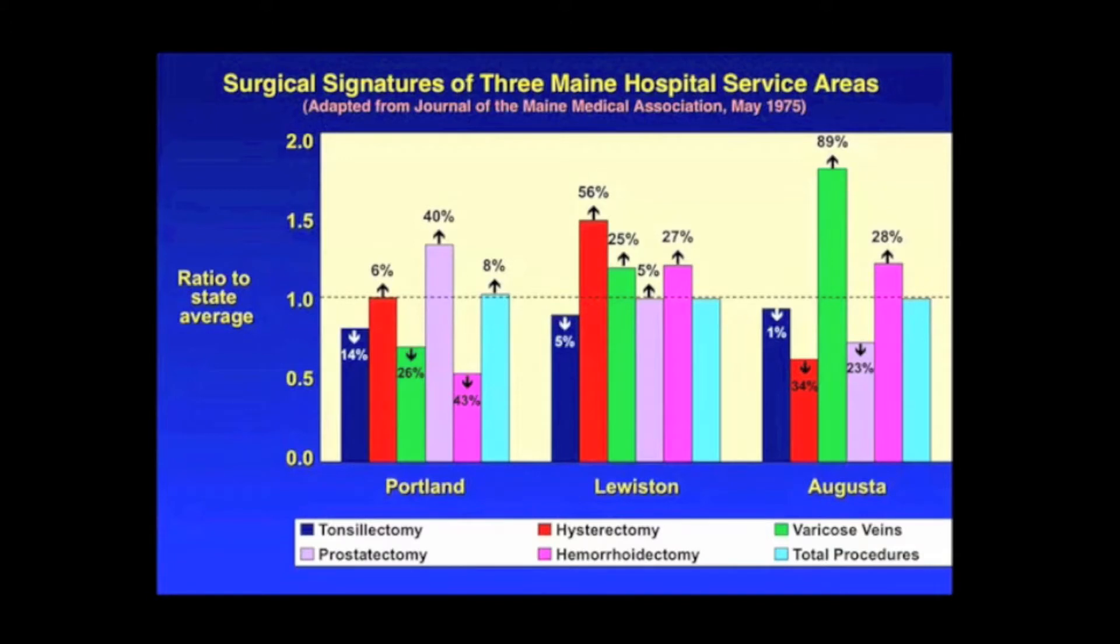Look over at Augusta, and they're 23% below the state average. On the other hand, varicose veins in Augusta are almost 90% above the state average, while in Portland they're 26% or 28% below.